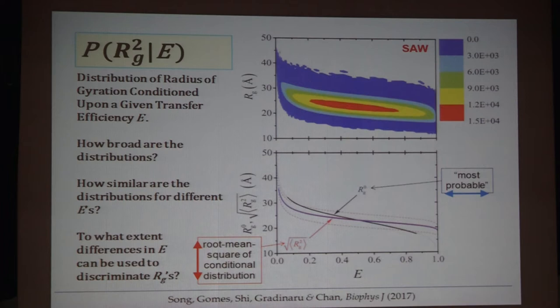With this basic distribution we can ask several questions: how broad are the distributions, how similar are the distributions of different transfer efficiency, and to what extent different E values can be used to discriminate different R_G — whether it's really as sharp a difference as inferred by the conventional methods.